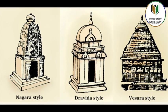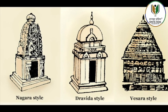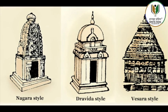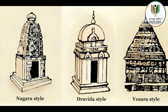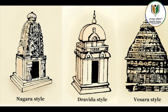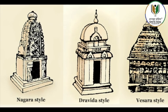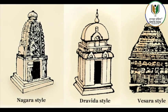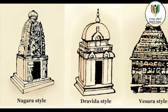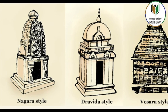Udayagiri, which is on the outskirts of Vidisha, is part of a larger Hindu complex of cave shrines, while the other one is at Sanchi, near the stupa.